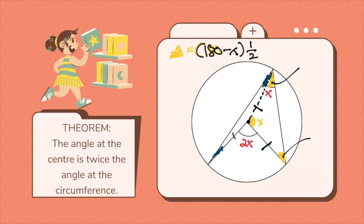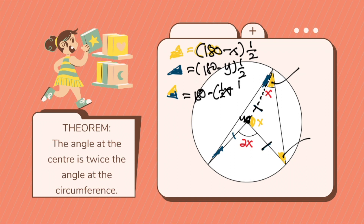Now for the blue side, the angle will be exactly the same: 180 minus y, divided by 2, will be the measure of your blue angle. Hence the whole angle measure of yellow plus blue will equal 180 minus half of x plus half of y. Therefore, the whole angle at the center is actually twice this whole measure — that is why the angle at the center is twice the angle at the circumference.